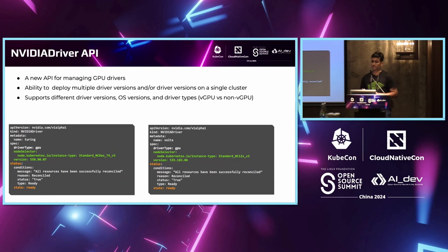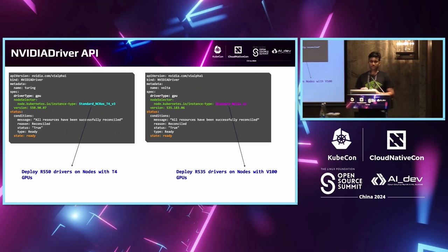The other custom resource is the NVIDIA driver API — a relatively new API. With the NVIDIA driver, you have the ability to deploy multiple driver versions. While it's possible to deploy the GPU driver with the cluster policy, there's a limitation in that you can only deploy one driver version cluster-wide. The NVIDIA driver API makes it possible to deploy multiple driver configuration sets using node selectors to target certain node pools. For example, you can have one NVIDIA driver targeting Azure T4 instances deploying the R550 drivers, and another targeting V100 instances deploying the 535 drivers.